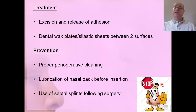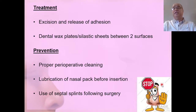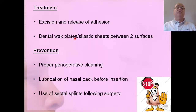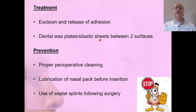Release of adhesions can be done with a knife, diathermy, bipolar cautery, or laser. More importantly, once released, a barrier must be placed between the two raw surfaces until normal epithelialization has occurred. Silastic sheets or dental wax plates can be used. Commercially available silastic sheets work well, but if unavailable, a glucose bottle can be cut into a sheet, sterilized, and placed in the nasal cavity for at least seven to ten days.